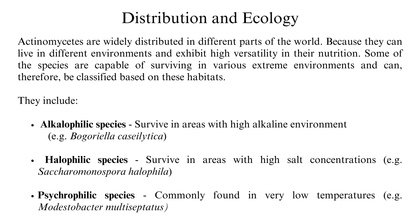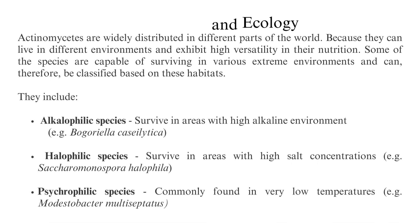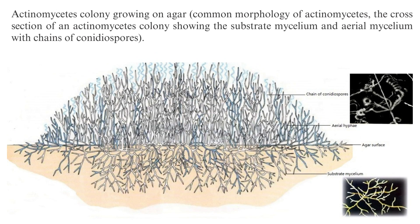Actinomycetes are widely distributed in different parts of the world because they can live in different environments and exhibit high versatility in their nutrition. Some species are capable of surviving in various extreme environments and can be classified based on their habitats. These include alkalophilic species that survive in high alkaline environments, for example Bogariella casilitica; halophilic species in high salt concentrations, for example Saccharomonospora halophila; and cryophilic species found in very low temperatures, for example Modestabacter multiseptidus. The diagram shows an actinomycetes colony growing on agar.